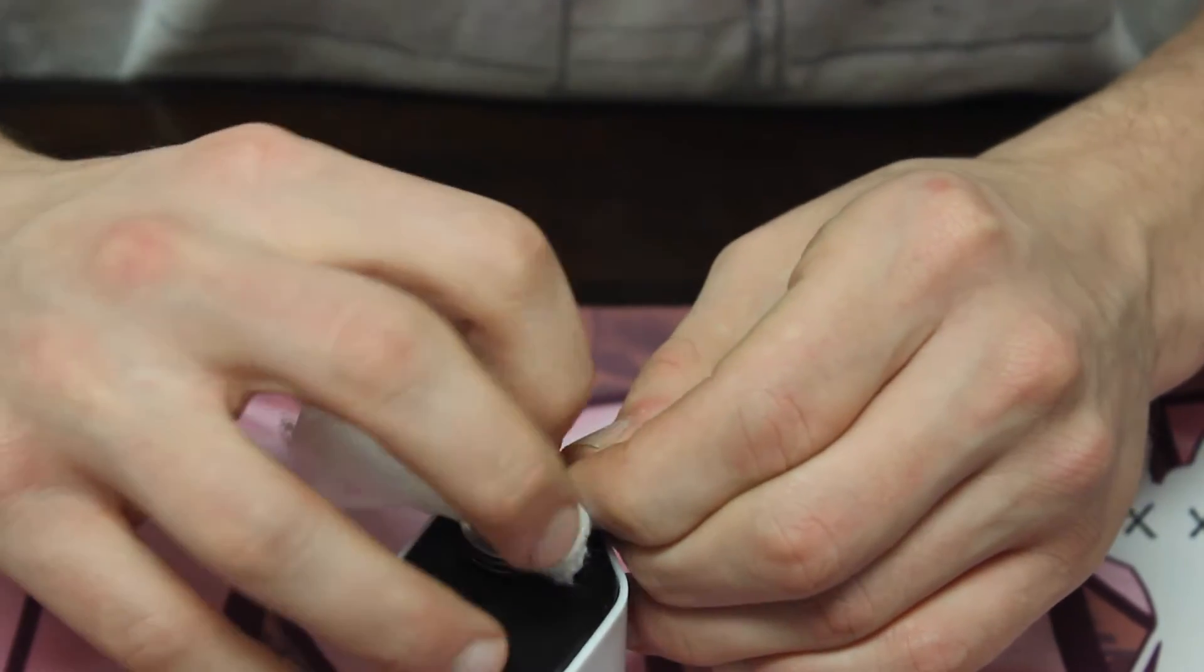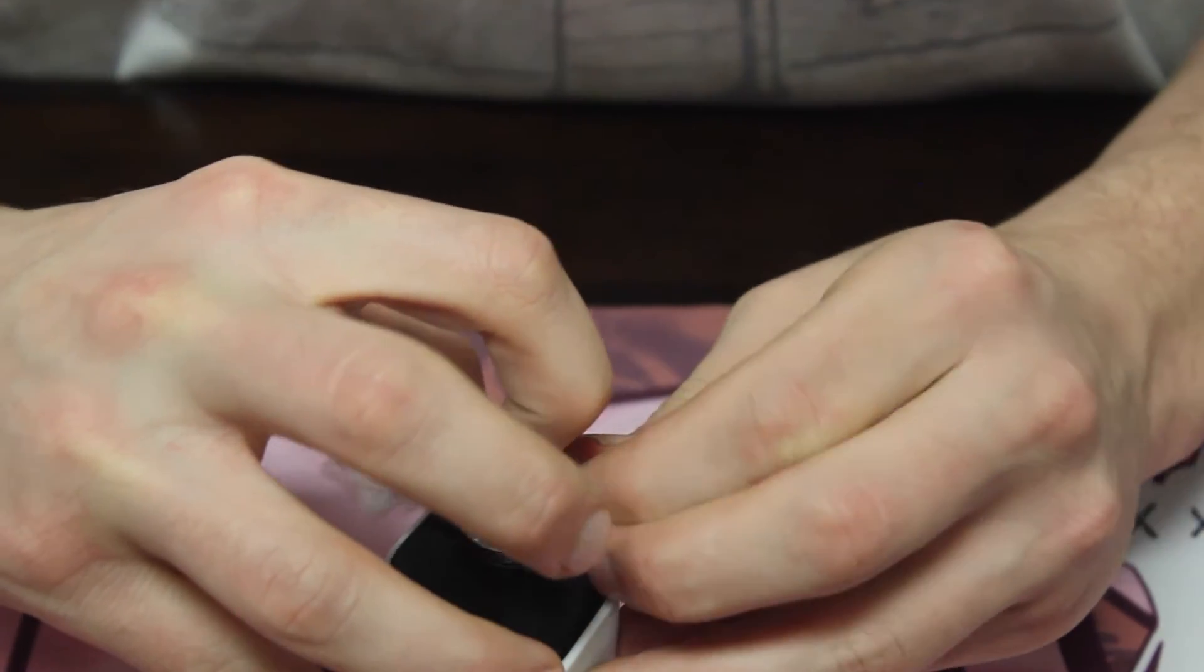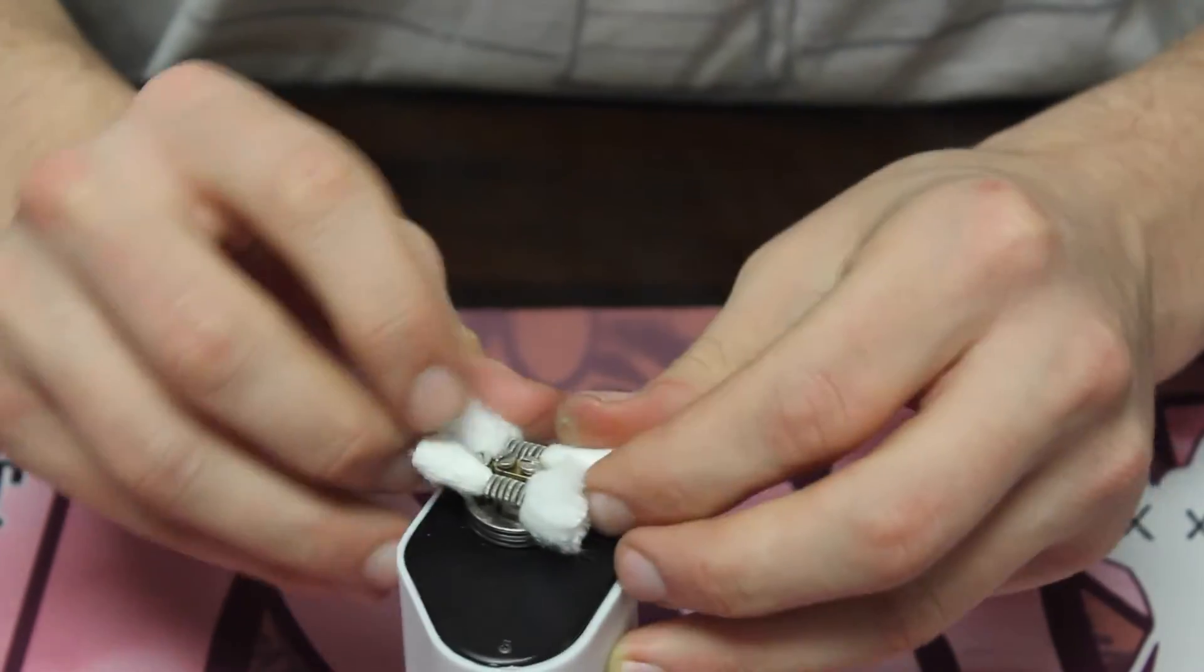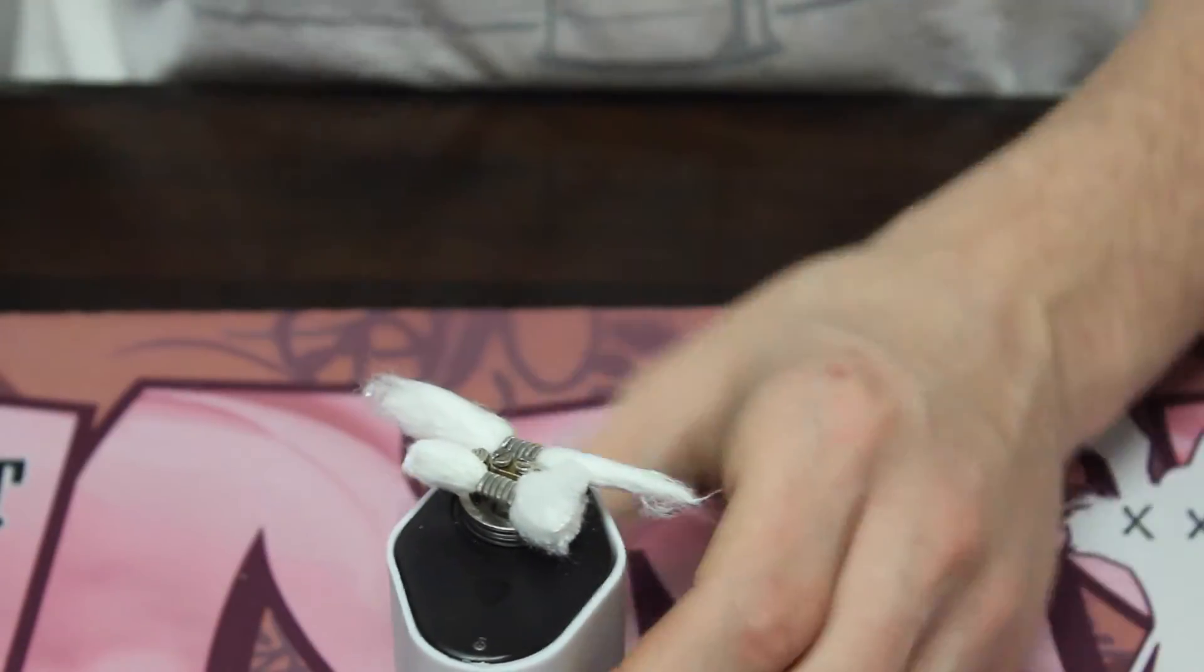As you can see you want it really tight. Just make sure you hold your coils in place if it's too tight and then pull it through so it doesn't move the coils at all. You gotta trim that one up real fast too.